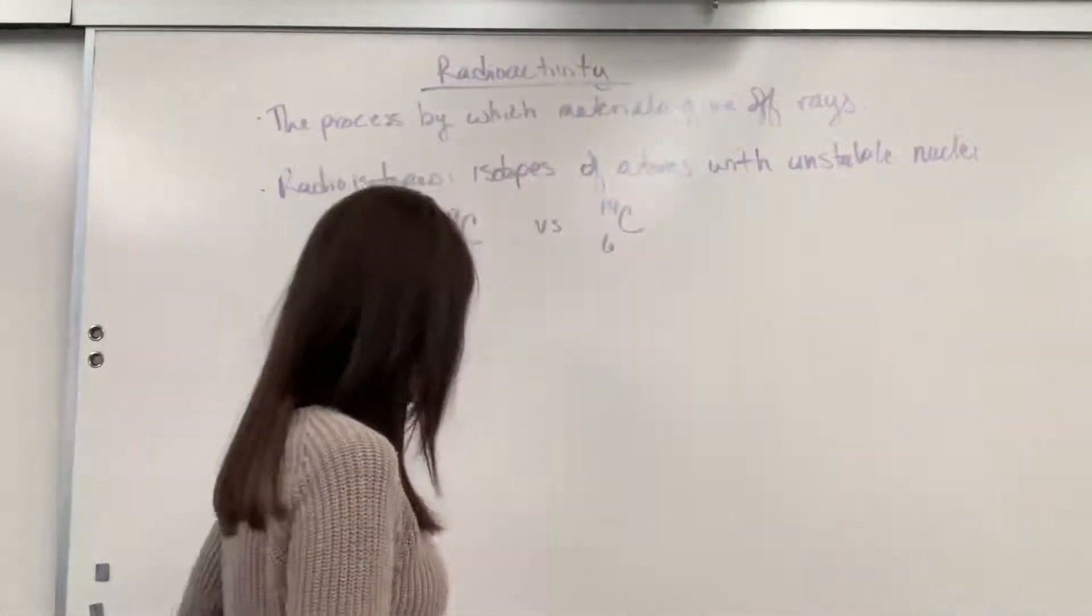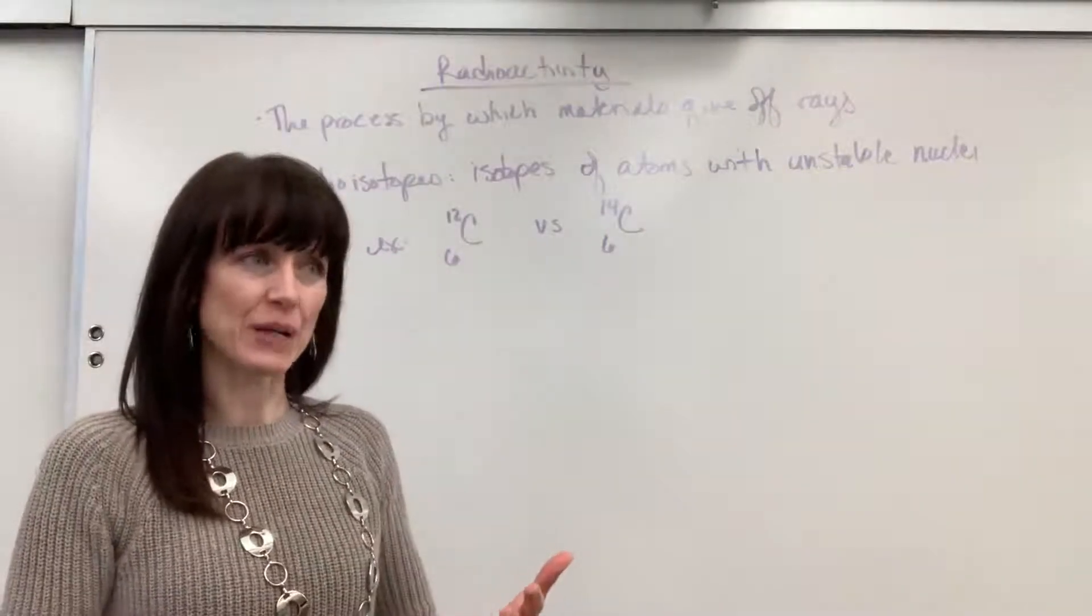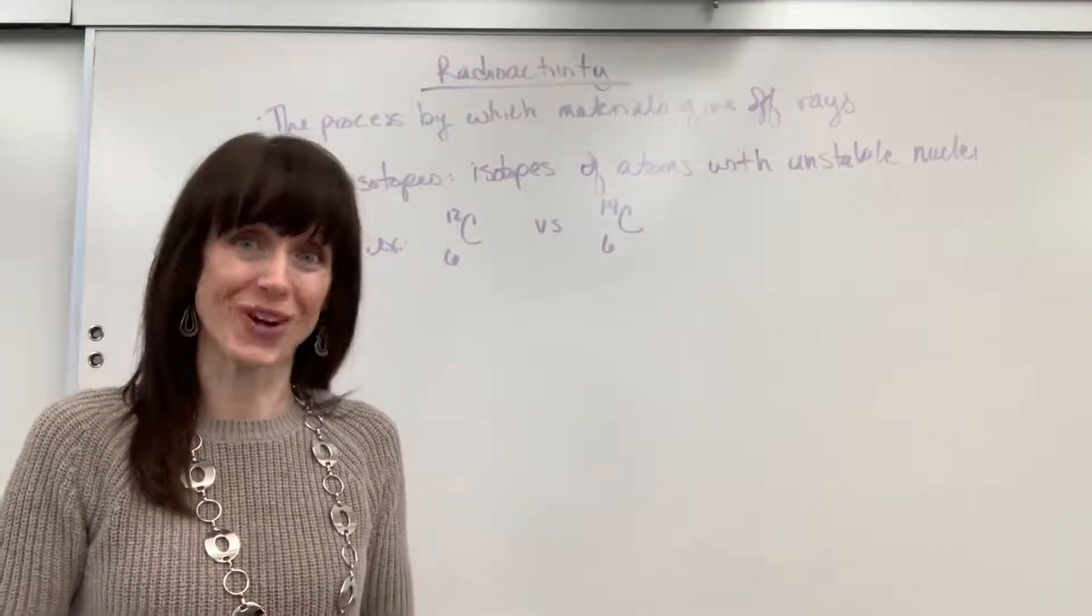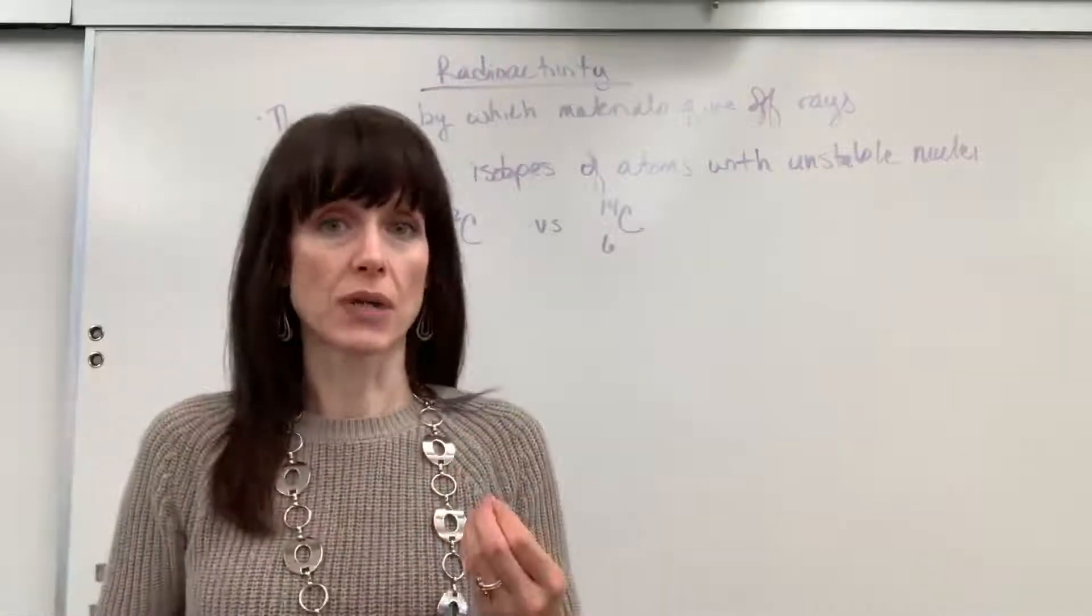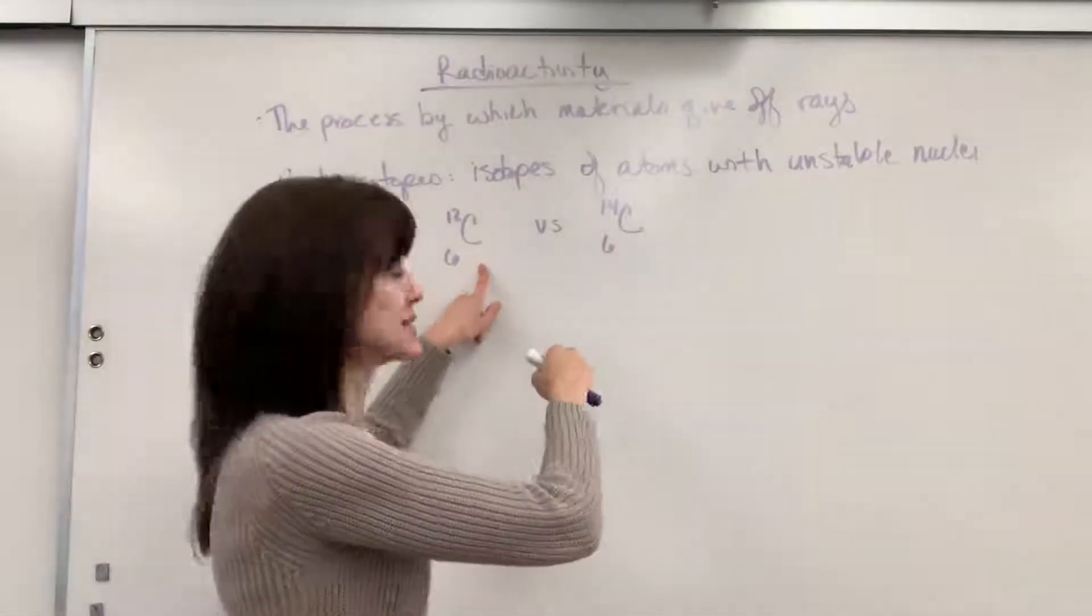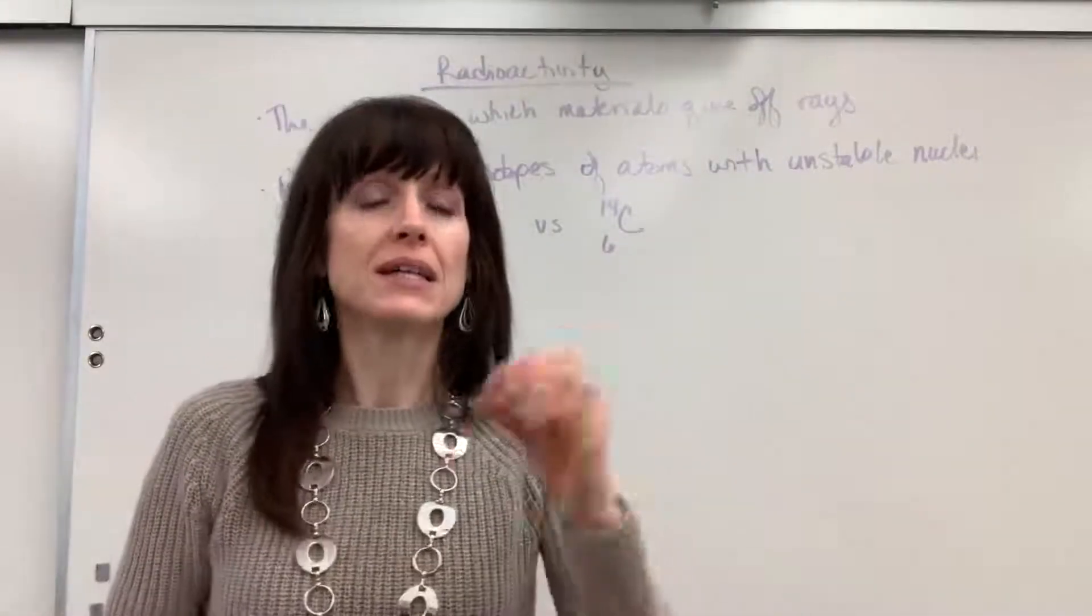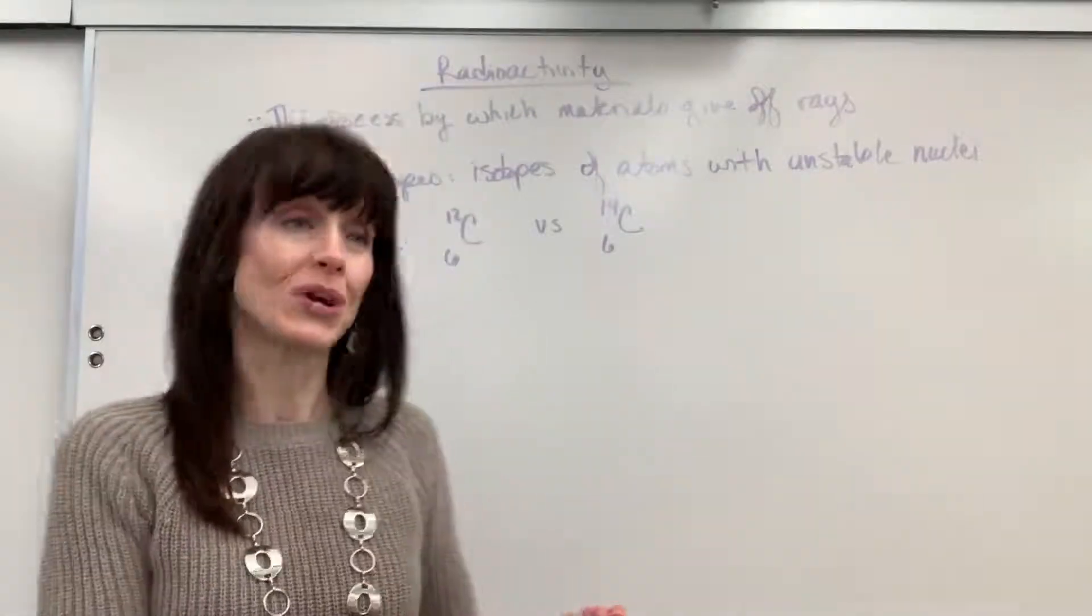Now, little review. Isotopes are simply a substance—I should say an atom—that has a different number of neutrons. It still has the same number of protons, so it's identical elements. Here's my example. Carbon and carbon both have six protons, atomic number six. But inside that nucleus, there's a different number of neutrons.